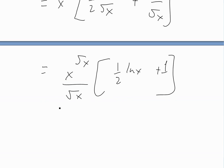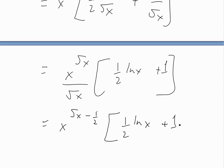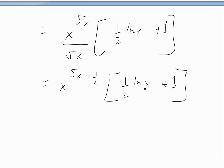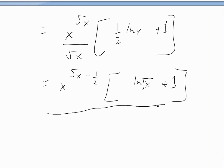Simplifying further: since x to the root x divided by root x gives x to the root x minus 1/2, we can write the answer as x to the root x times (1/2 ln x plus 1) all over root x. Using log rules, you can simplify this even further by converting the fraction into an exponent, but essentially this is the final form of the derivative.